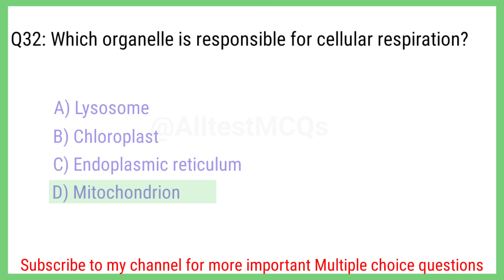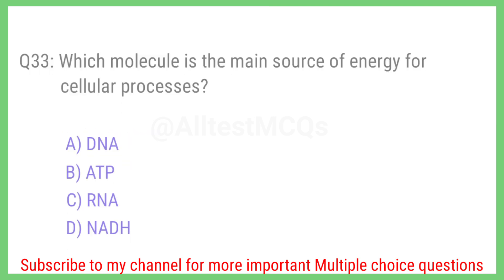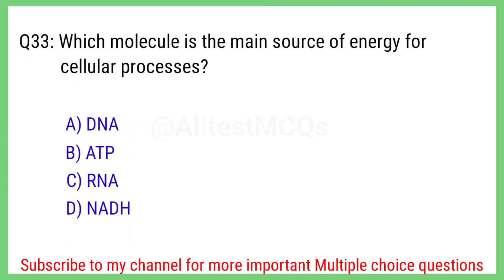Question number 33. Which molecule is the main source of energy for cellular processes? The right answer is option B. ATP.